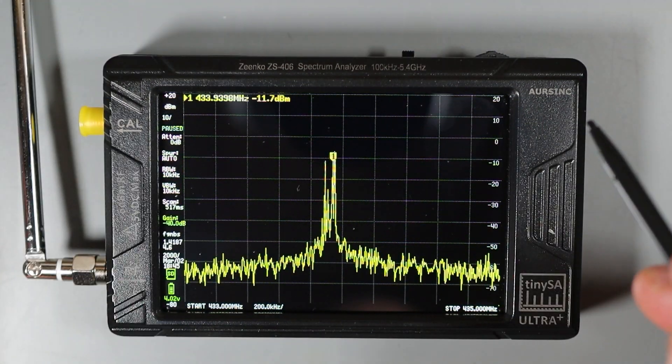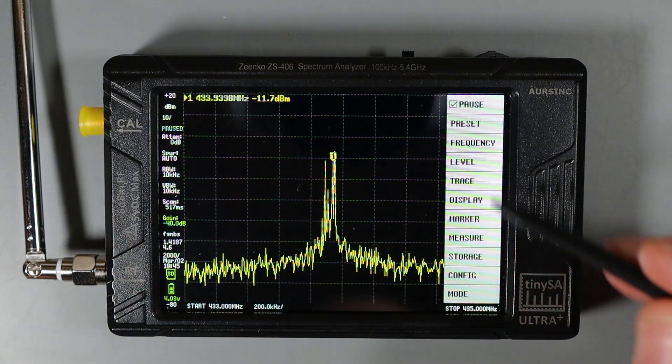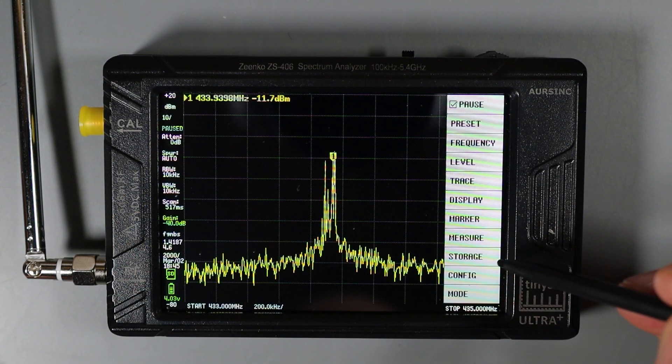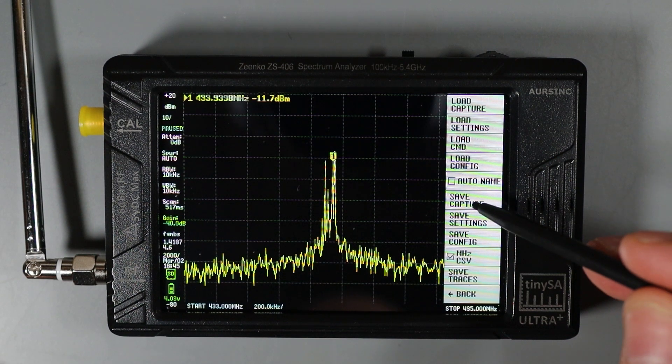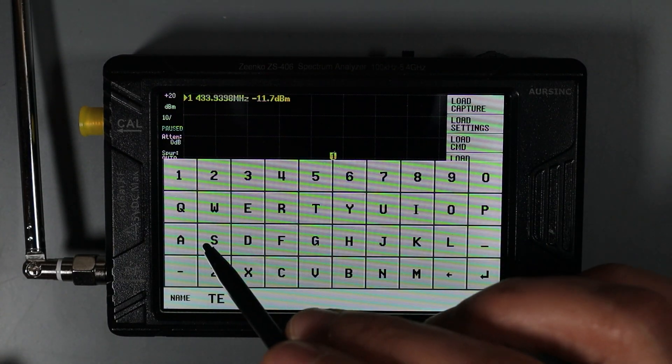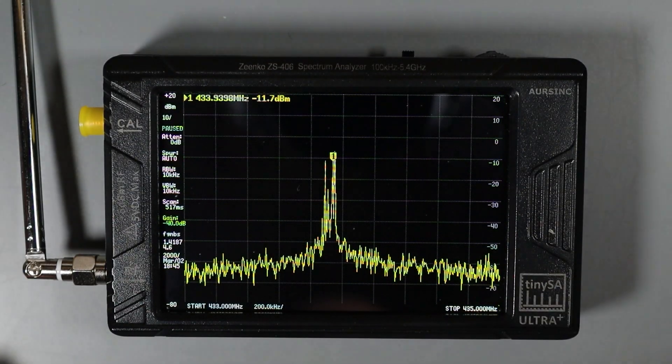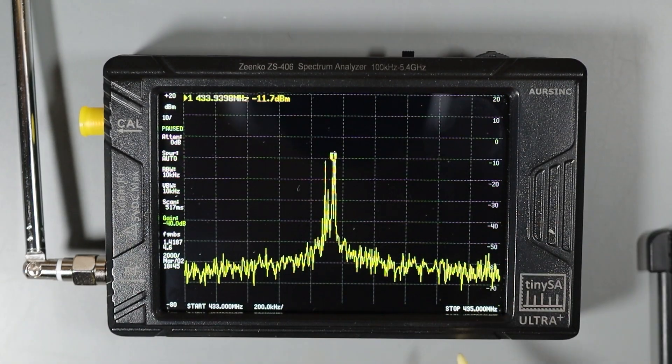You can also save screenshots from the TinySA to the SD card. We access the main level of the menu and go to storage and then choose the save capture item and give it a file name. And you can see test.bmp was written to the SD card. Later I can take the SD card out and pop it into another device like a computer that can read that bmp file and examine it further.